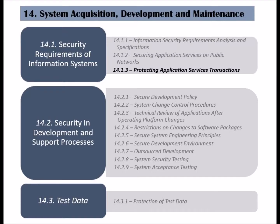The third and last control of the security requirements of information systems is called protecting application services transactions. An organization's provided applications should be secured, and service transactions should be protected from unauthorized access.